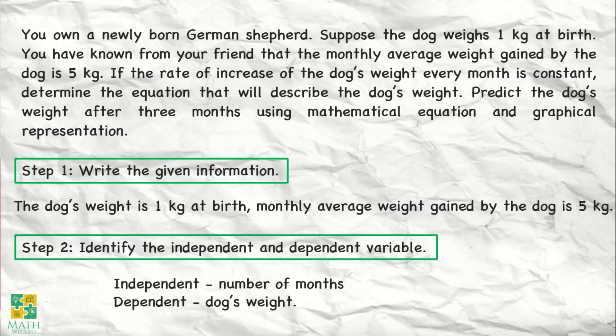Bakit ang ating dependent is dog's weight? Kasi, yung weight ng dog is nakadepende sa number of months. Let's say, kung at birth, it's 1 kilogram, after a month, nadagdagan siya ng 5 kilograms, after a month naging 6 kilograms. So yung weight ng dog is nakadepende sa number of months. Kaya ang ating dependent variable is the dog's weight and our independent variable is the number of months.